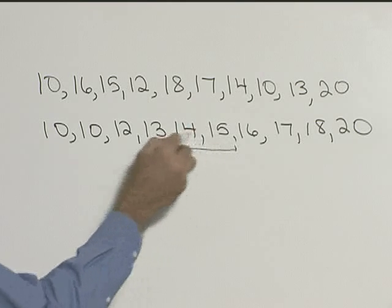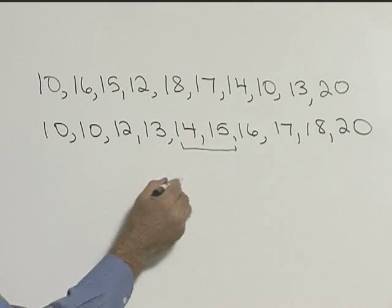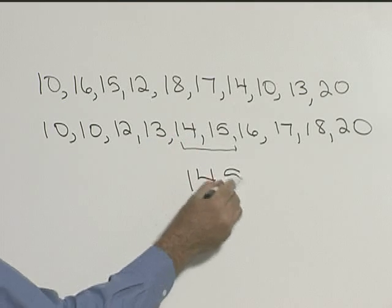So to find the median, what we have to do is take the average of those. So fourteen and fifteen, the average of that will be fourteen and five tenths.